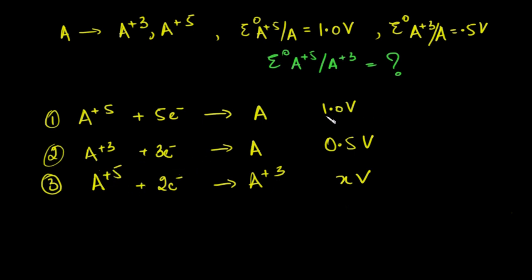The reason is that EMF, reduction potential - the definition of potential is effectively work done per unit charge. It is defined per unit charge: 1 volt, 0.5 volt, x volt - this is per unit charge. Whereas the charge involved in each of these reactions is different. Here it's 5 mole of electrons, here 3 mole of electrons, here 2 mole of electrons. The unit charge here is 5, 3, and 2, whereas these values - 1 volt per unit charge of electron, 0.5 volt per unit charge of electron, x volts per unit charge. So you cannot simply subtract this because this is not true for the entire reaction, this is true only per unit charge.